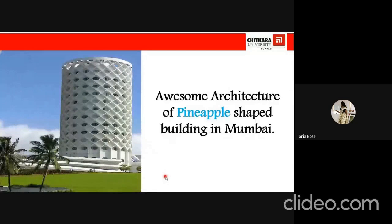This is the Virupaksha Temple. It's located in Hampi, Karnataka. And it is designated as a UNESCO's World Heritage Site. And you can see that it has a fractalized structure where the parts resemble the whole. This is a famous building in Mumbai. You can see the awesome architecture. It's in the shape of a pineapple. So just imagine the maths behind this architecture.